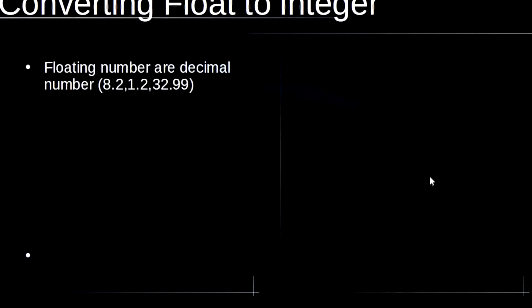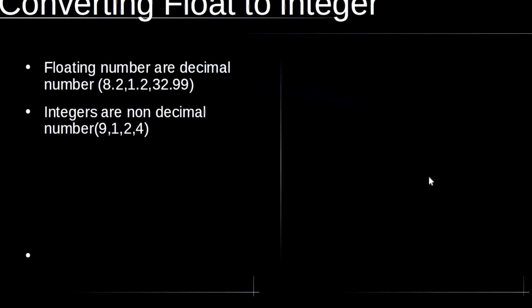First we will talk about converting a floating point number to an integer. Floating point numbers are the decimal numbers — for example, 8.2, 1.2, 32.9999. Integers are the non-decimal numbers like 9, 1, 2, 4, 0, -1, -2.